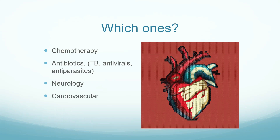Which drugs are the main culprits of this drug-induced neuropathy? First of all, chemotherapy — a very well-known group of drugs that cause neuropathy, though not all chemotherapeutics cause it. We might also find some antibiotics, drugs used for TB or tuberculosis, antivirals mainly for HIV, antiparasites like chloroquine and hydroxychloroquine, and some neurology and cardiovascular drugs.